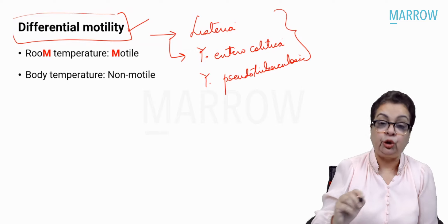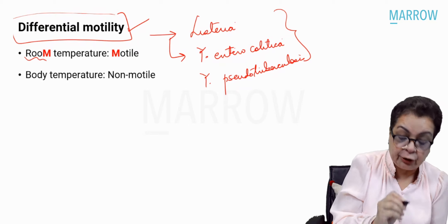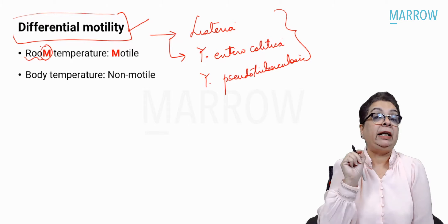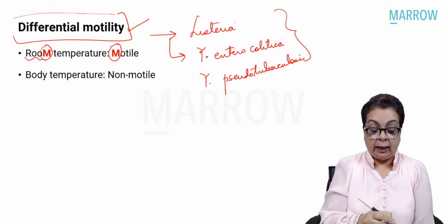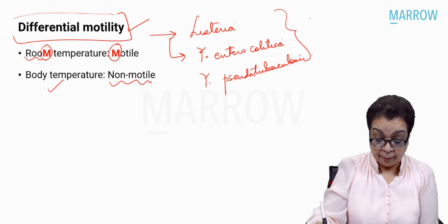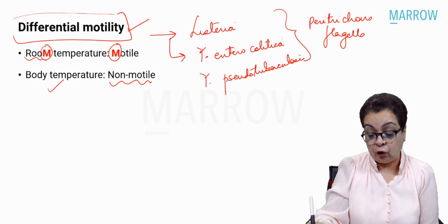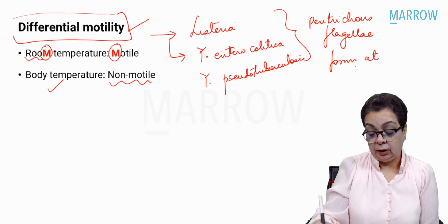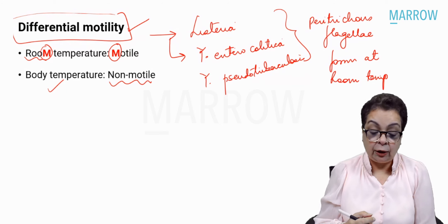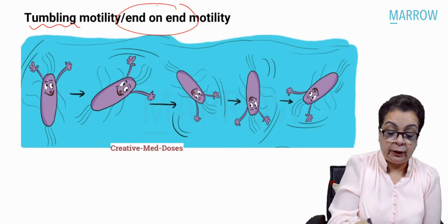Yersinia pestis is non-motile. To remember differential motility: at room temperature — the word 'room' ends with M — they are Motile. At body temperature of 37°C they are non-motile. These organisms form peritrichous flagella only at room temperature. A special characteristic of Listeria is its beautiful tumbling motility or end-on-end motility.